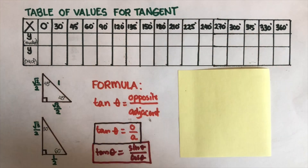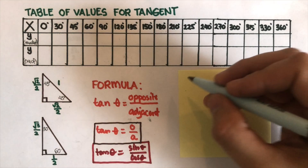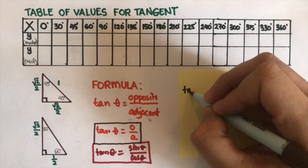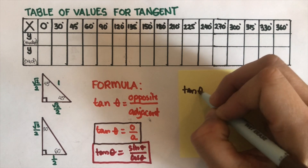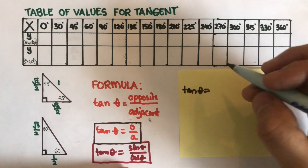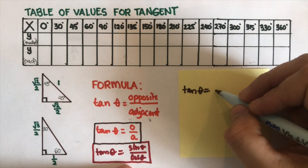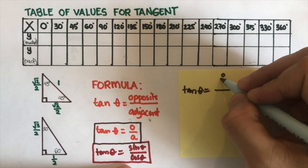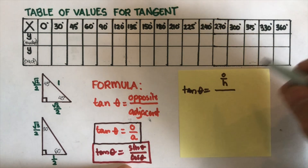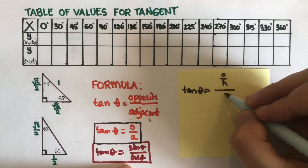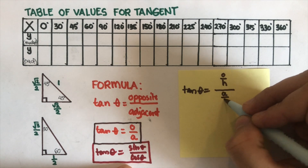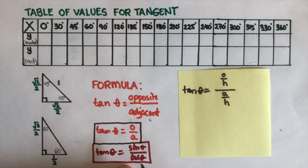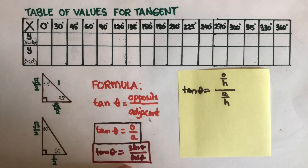Now let's have the proof to this — let's see if this is really true. So let's take tangent theta equal to sine over cosine. The formula for sine is opposite over hypotenuse, and cosine is adjacent over hypotenuse. So sine is opposite over hypotenuse, and cosine is adjacent over hypotenuse.